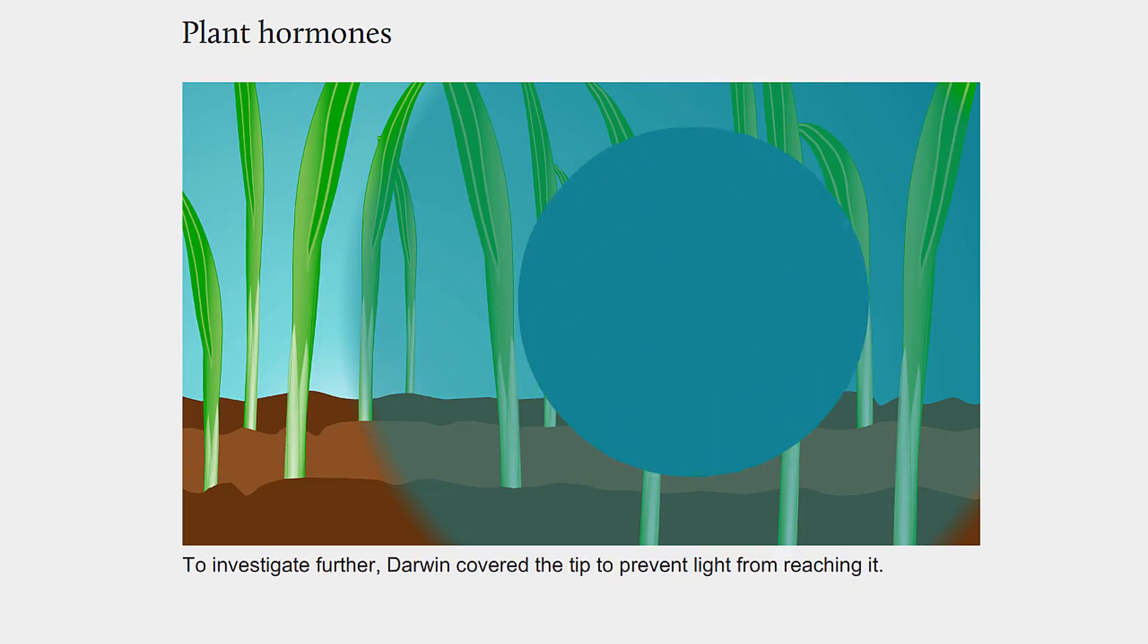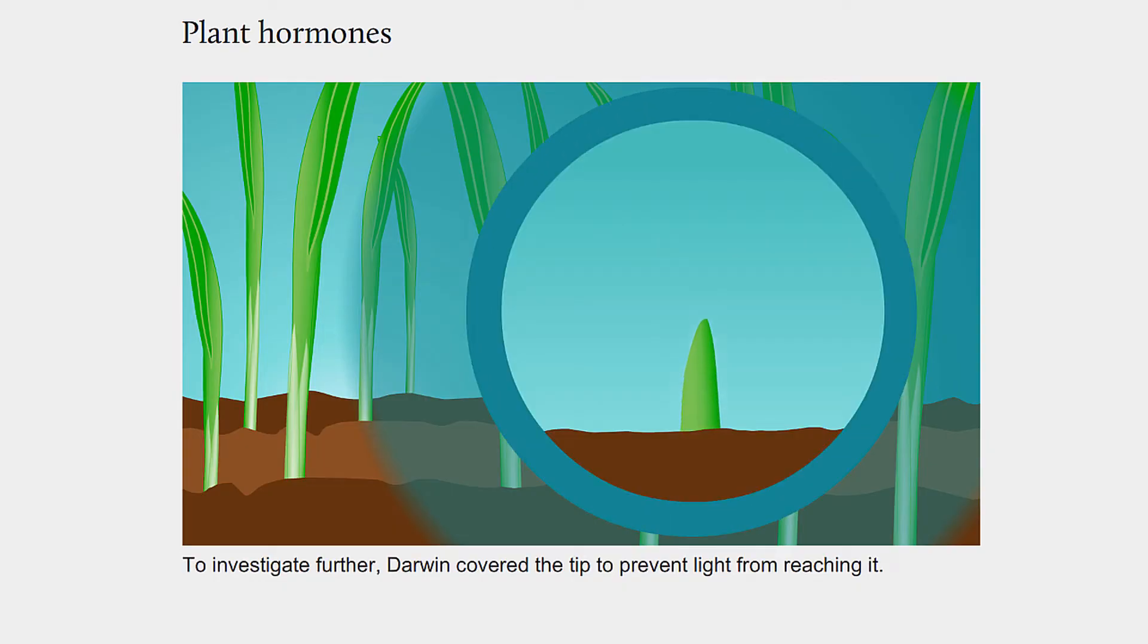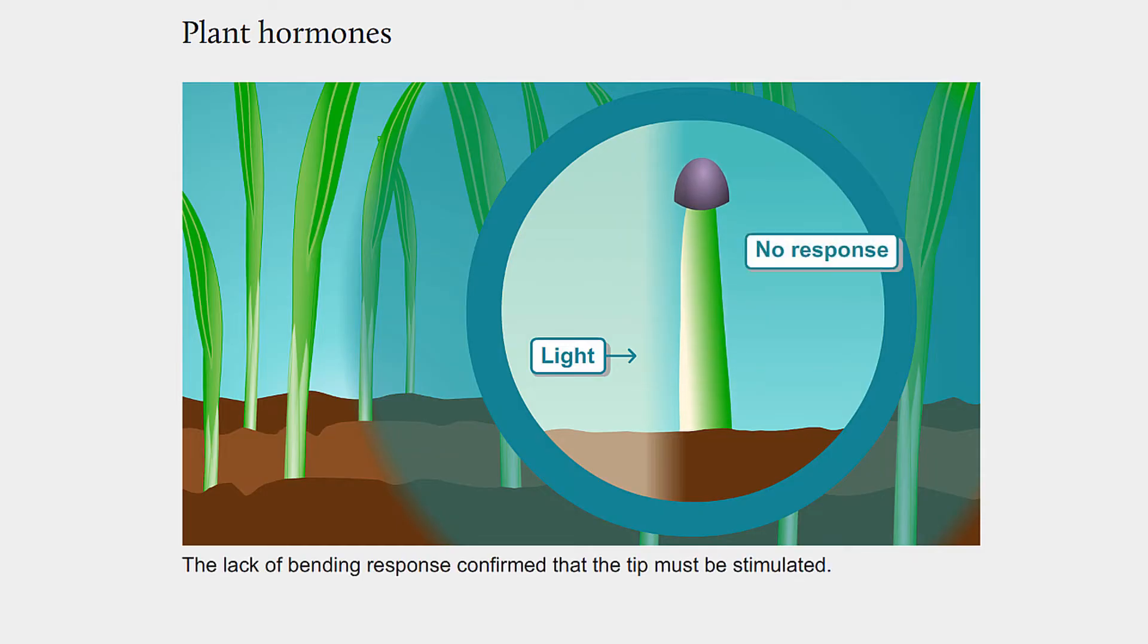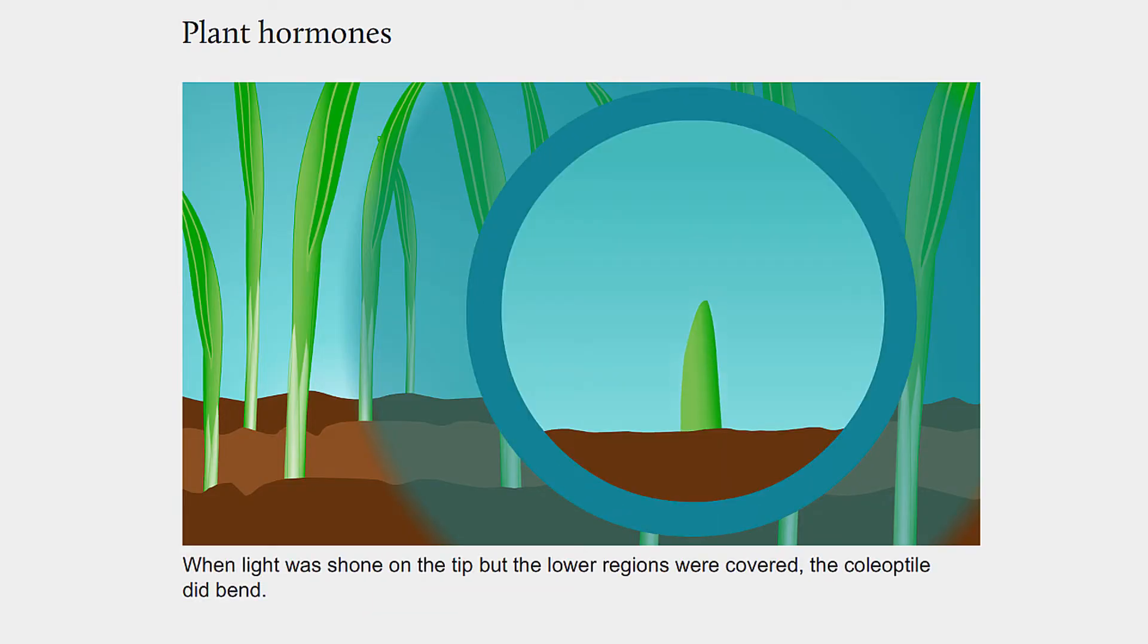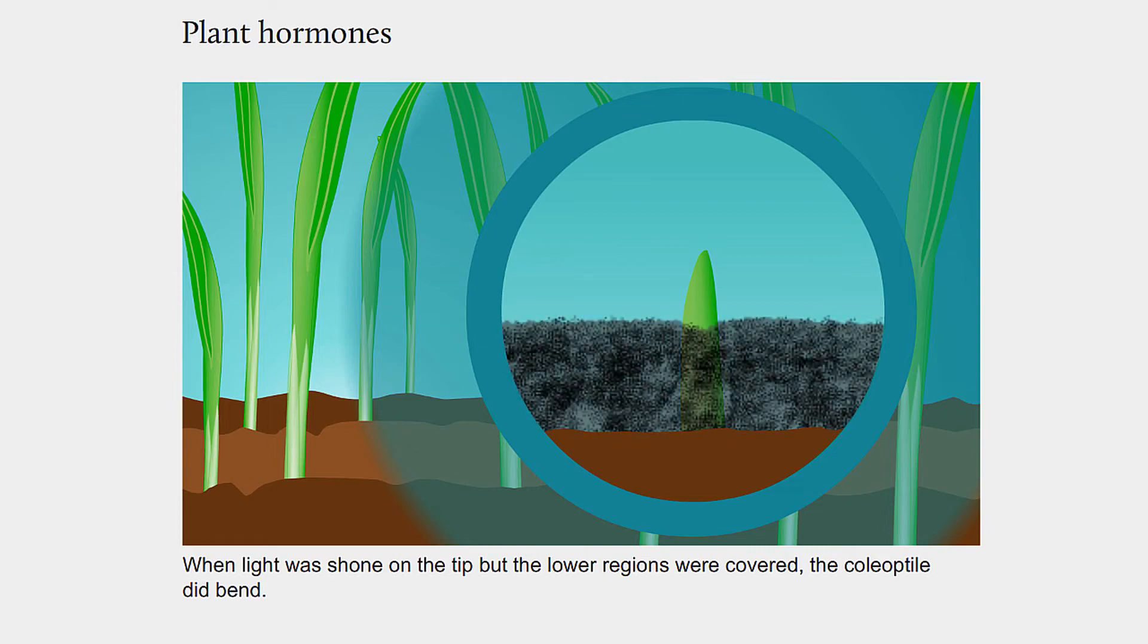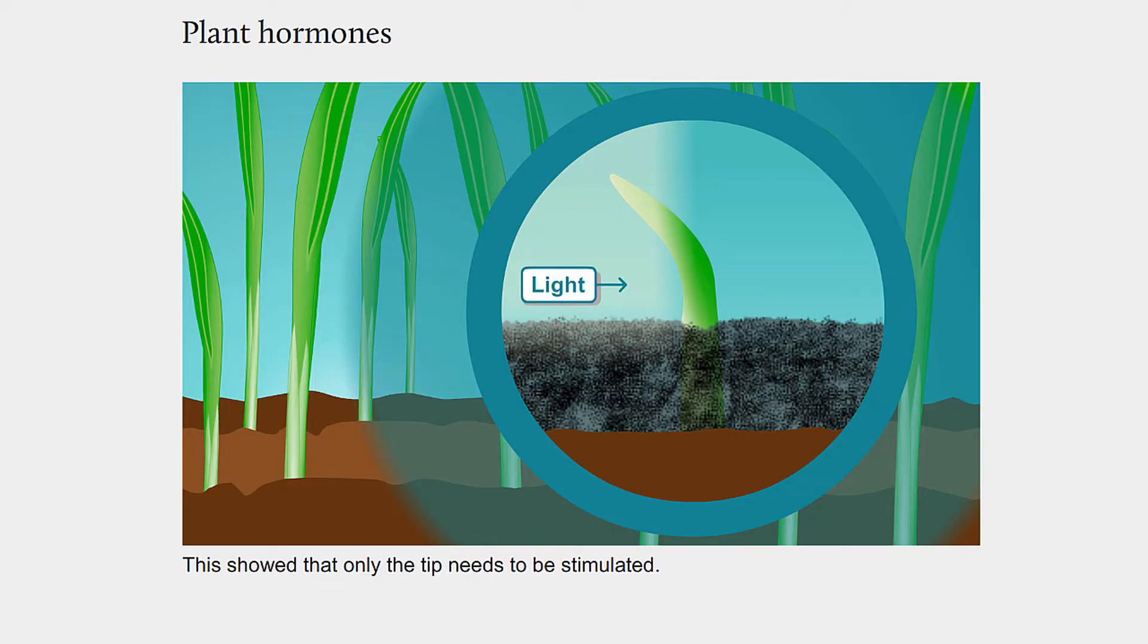To investigate further, Darwin covered the tip to prevent light from reaching it. The lack of bending response confirmed that the tip must be stimulated. When light was shone on the tip but the lower regions were covered, the coleoptile did bend. This showed that only the tip needs to be stimulated.